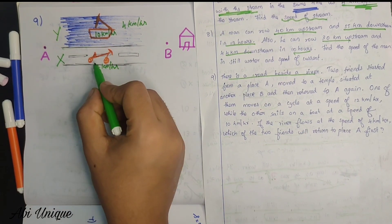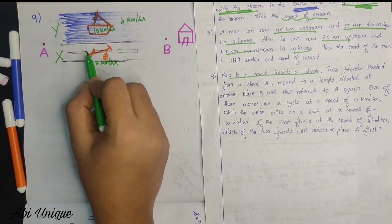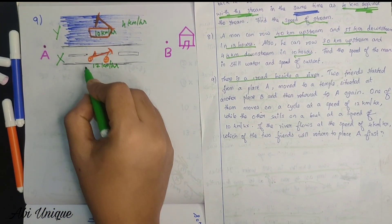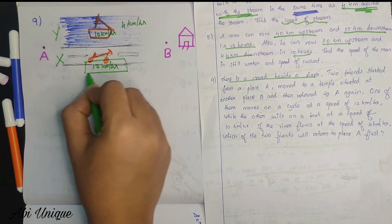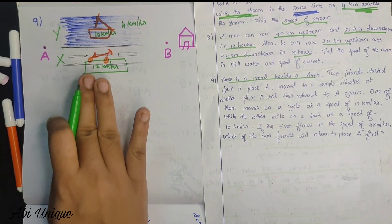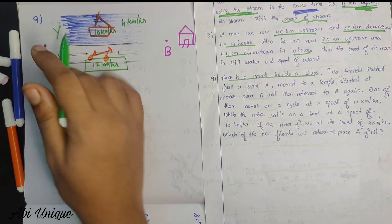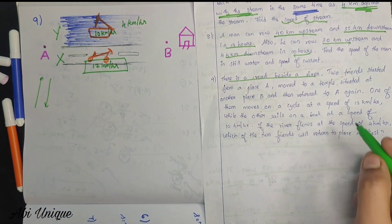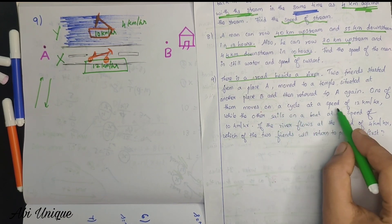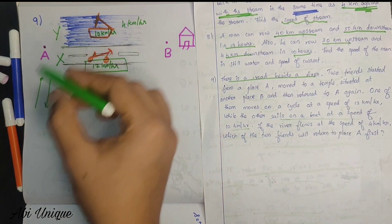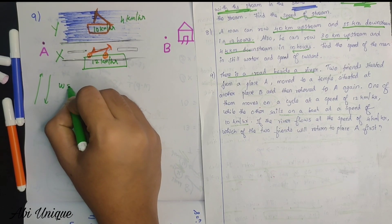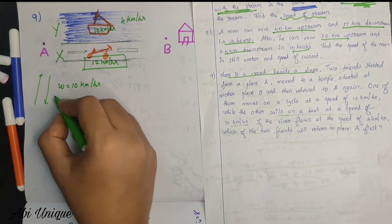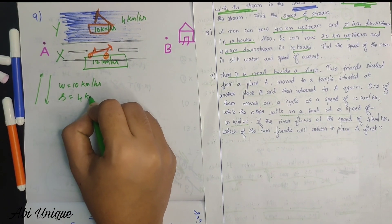Now we are going to solve this. The average speed of the cycle person is 12 km per hour. Now we know how the boat moves upstream and downstream. From this question, we know the speed of the boat is 10 km per hour in still water — so W is 10 km per hour. The river flows at a speed — that is the stream speed — of 4 km per hour.